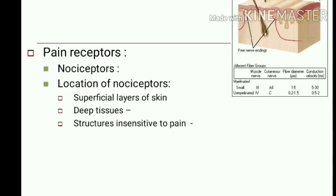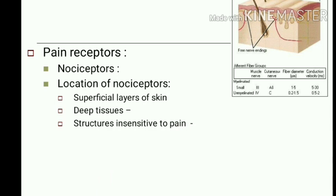Pain receptors are also known as nociceptors because they respond to noxious stimuli; free nerve endings are the receptors for pain. They are located in the superficial layers of the skin and also in deep tissues like periosteum, joints, arterial walls, falx and tentorium in the cranium, liver capsule, bile ducts, bronchi, and parietal pleura. Importantly, structures insensitive to pain include liver parenchyma and lung alveoli, but nearby structures are very sensitive — liver capsule is sensitive, and bronchi and parietal pleura are very sensitive to pain.